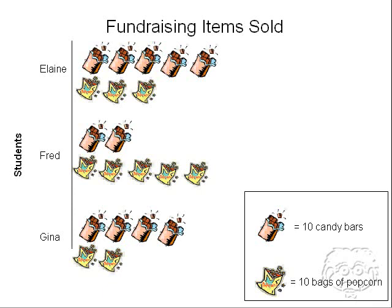Here it shows what different students — Elaine, Fred, and Gina — sold during a school fundraiser. You can see in our image key in the bottom right corner there are two pictures, and they represent different things. The candy bar represents 10 candy bars sold, and the bag of popcorn represents 10 bags of popcorn sold. They represent the same quantity — they each represent 10 — but they represent different things. We have to understand that in order to understand the pictograph.